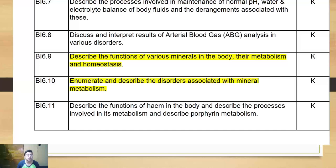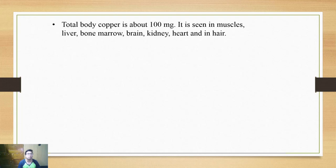To start with, you should know total body copper is about 100 mg, and it's present in muscles, liver, bone marrow, heart, kidney, and hair.